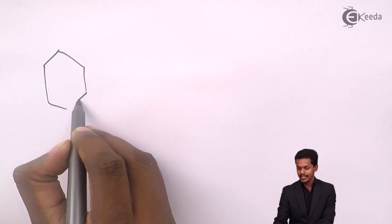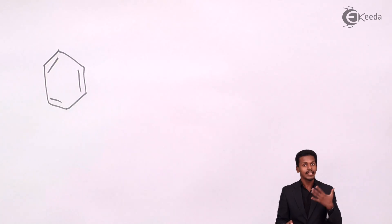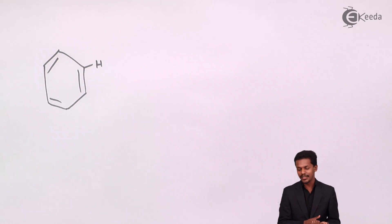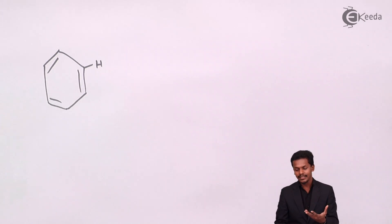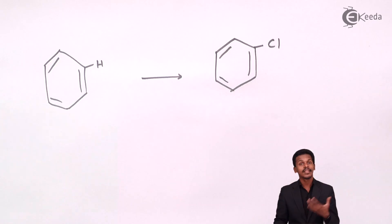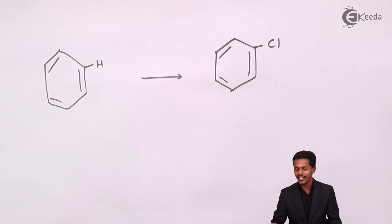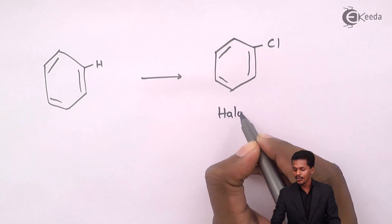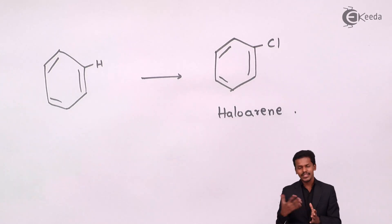Suppose if we have an aromatic compound, commonly known as benzene. Benzene consists of basically six hydrogen atoms. If we are concerned with replacing only one of the hydrogen atoms with a halogen atom — suppose if we have replaced one hydrogen atom with a chlorine atom — we get an aromatic compound in which one hydrogen has been replaced by the corresponding halogen atom. This is known as haloarene, and the name of this product is chlorobenzene.